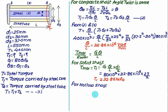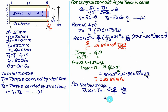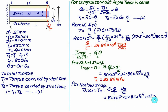For the hollow shaft, the maximum shear stress occurs at the outer radius D3/2. So tau_2 = G * (theta/L) * (D3/2) = 80 × 10³ × 32.86 × 10⁻⁶ × (37.5/2). Solving this gives the shear stress in the tube as approximately 49 MPa.